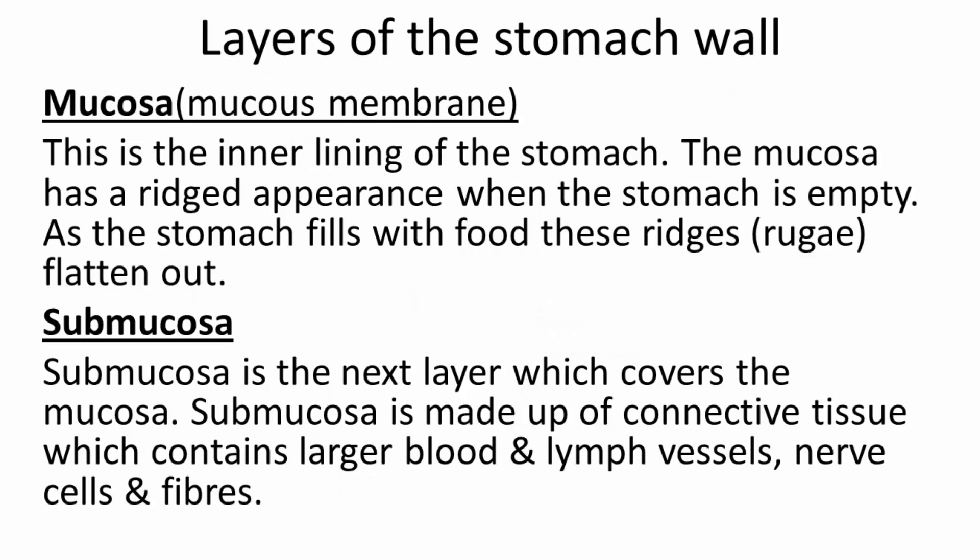The stomach is made up of several layers of tissue. The innermost layer is the mucosa, or mucous membrane. The mucosa has a ridged appearance when the stomach is empty; as the stomach fills with food, these ridges — called rugae — flatten out. The next layer is the submucosa, which covers the mucosa and is made up of connective tissue containing larger blood and lymph vessels, nerve cells, and fibers.